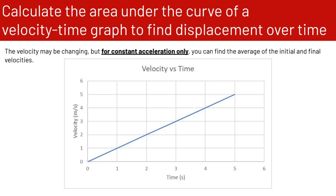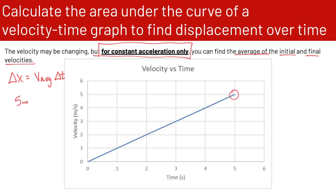Here's a slightly different case — a changing velocity. Using the mathematical approach again, delta x equals average velocity times delta t. Because the velocity is changing, you can find the average of the initial and final velocities, but this only works for constant acceleration. The final velocity is 5 meters per second and the initial velocity is 0, so the average velocity is 2.5 meters per second.